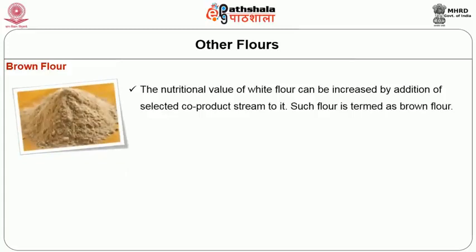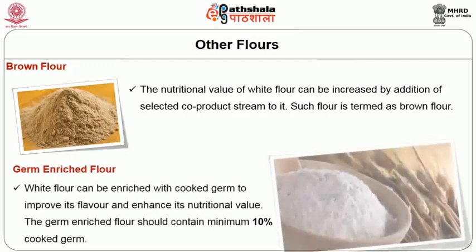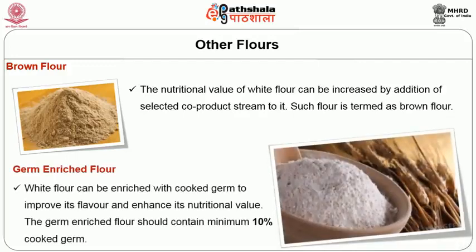Brown flour: the nutritional value of white flour can be increased by addition of selected co-product streams to it; such flour is termed as brown flour. Germ enriched flour: white flour can be enriched with cooked germ to improve its flavor and enhance its nutritional value. The germ enriched flour should contain a minimum of 10 percent cooked germ.